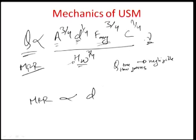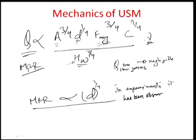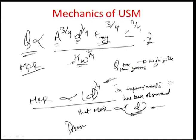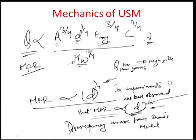This gives MRR proportional to D^(1/4), where D is the grain diameter. However, in experiments it has been observed that the material removal rate is proportional to the first power of D, not D^(1/4). This discrepancy arose from Shaw's model and needed an explanation to fit the experimental data proportional to D within the theoretically derived Shaw's model.